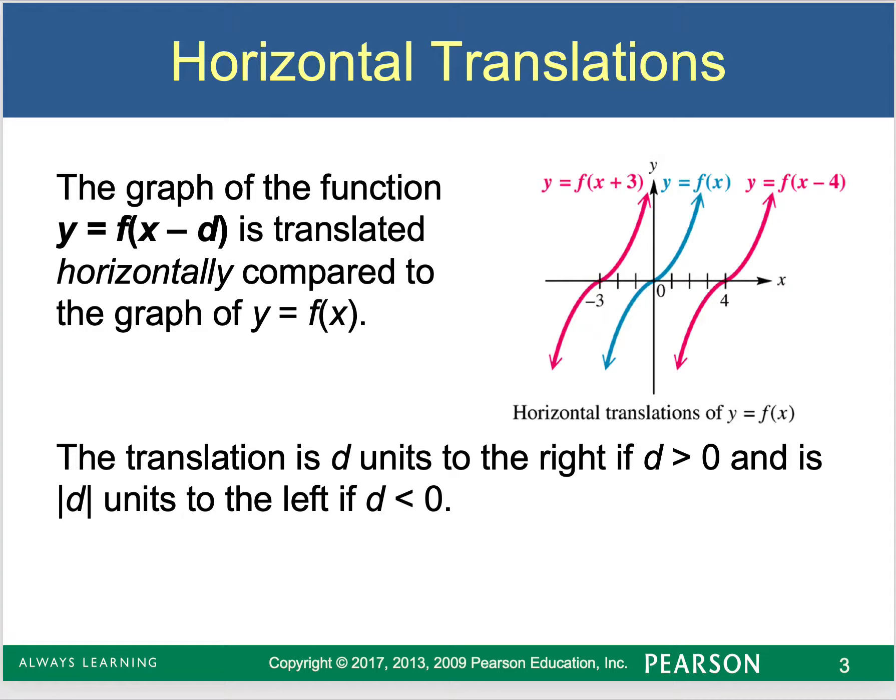A horizontal translation happens in the parentheses of the trig function. So it would be sine of x plus two or x plus π. That's going to be a horizontal translation. What you have to keep in mind with the horizontal translation is it moves opposite of what your instincts will say. If I'm adding something to x, it's actually going to move to the left. If I'm subtracting something from x, it's actually going to move to the right.